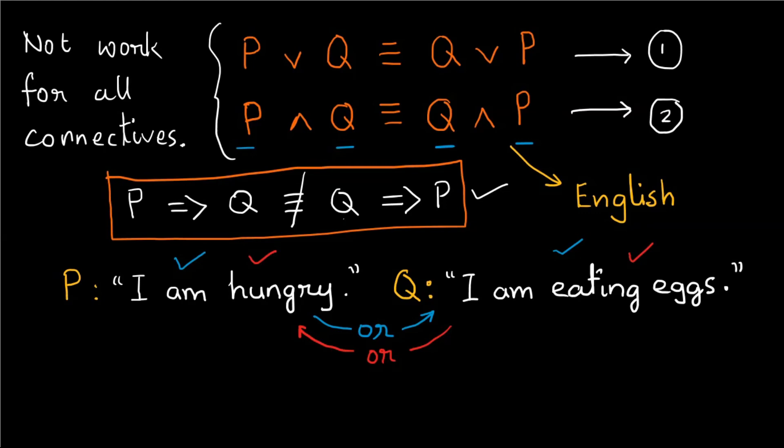Similarly if both P and Q are false, the first equivalence is false.